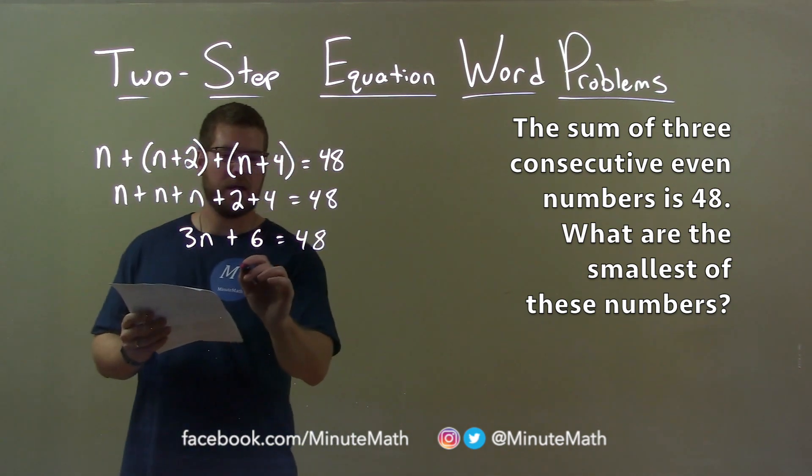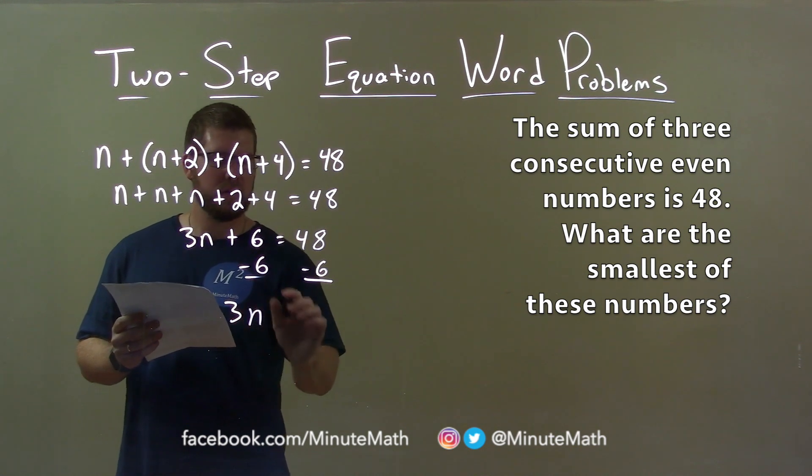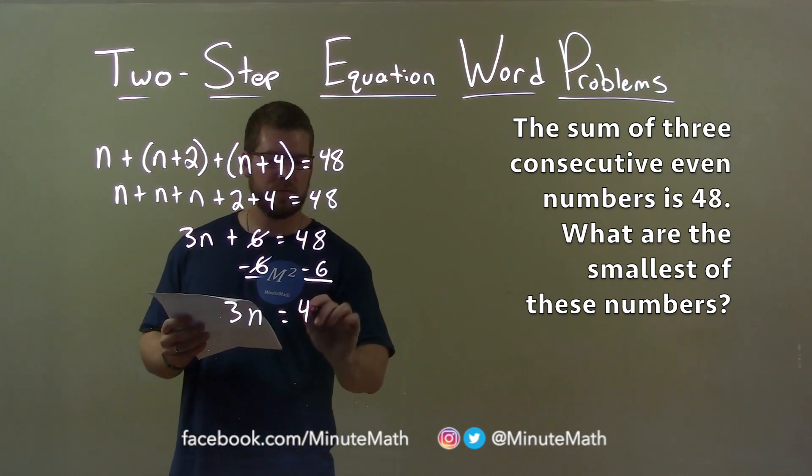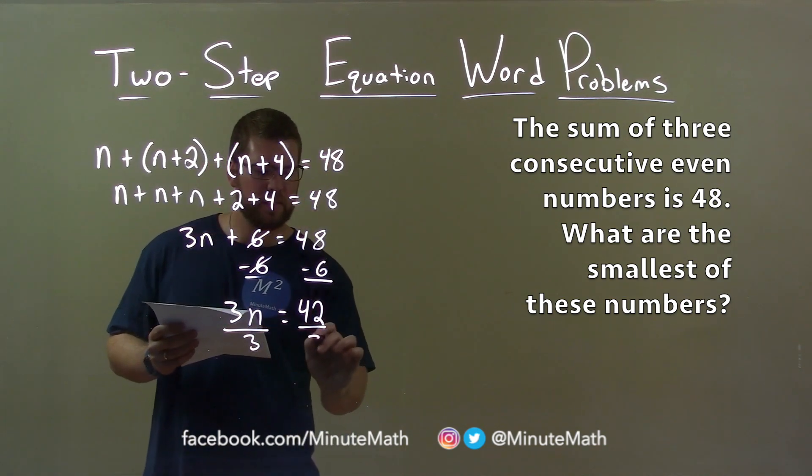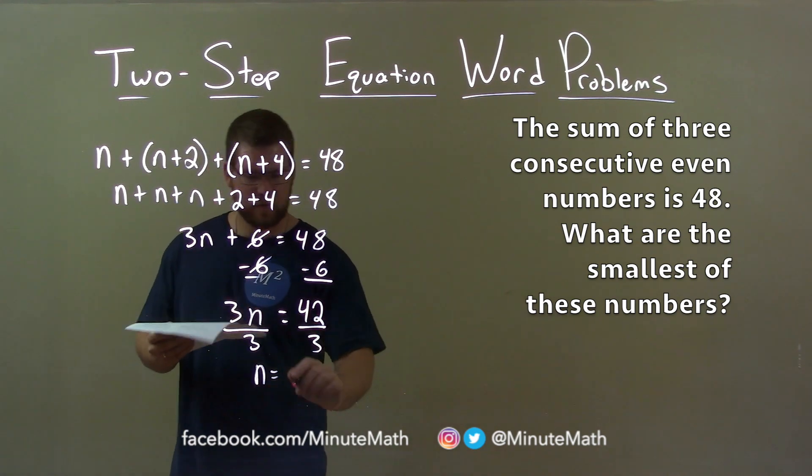I subtract a 6 to both sides. And in doing so, I'm left with 3n. 6s will cancel. And 48 minus 6 is 42. Divide both sides by 3 and now I have n by itself. 42 divided by 3 is 14.